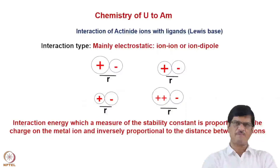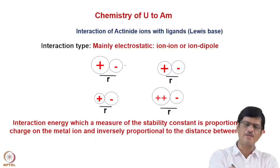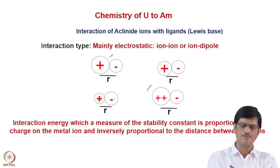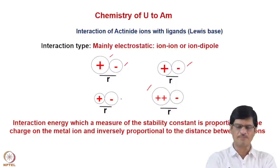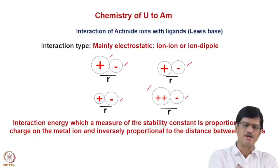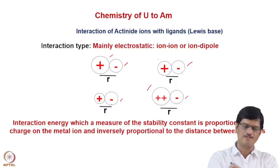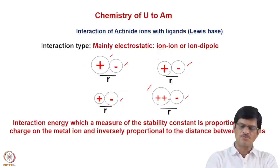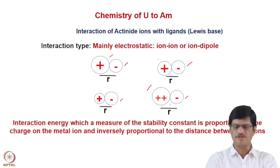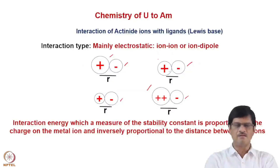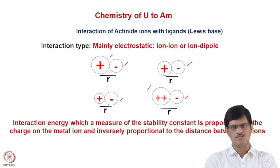I have shown a schematic where the different actinide ions are represented by either plus or double-plus, meaning multiply charged metal ions, and the ligand is taken as minus for simplicity. Four cases are shown where the metal ion size varies: the first case has a larger metal ion than the second, the third has a ligand larger than the metal ion, and the fourth has a doubly charged metal ion larger than the donor group. The radius between the metal ion and the ligating ion varies depending on the size of the metal ion, so stability depends not only on charge but also on the distance between the ions.